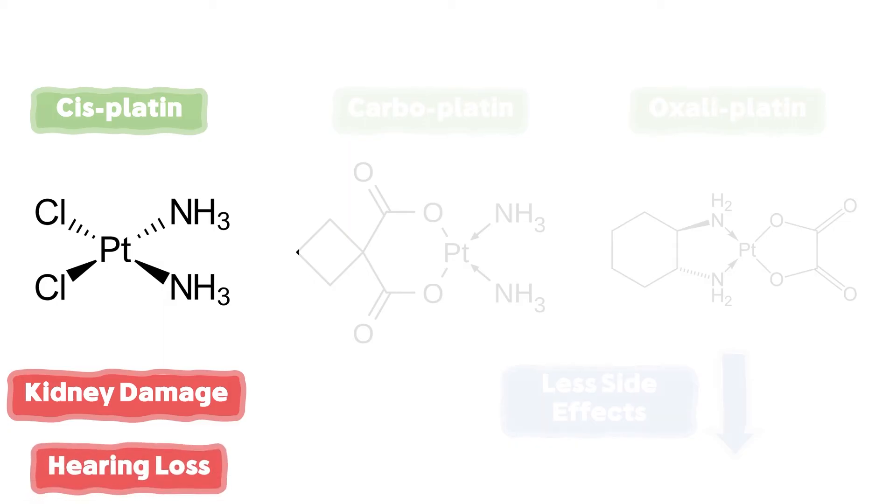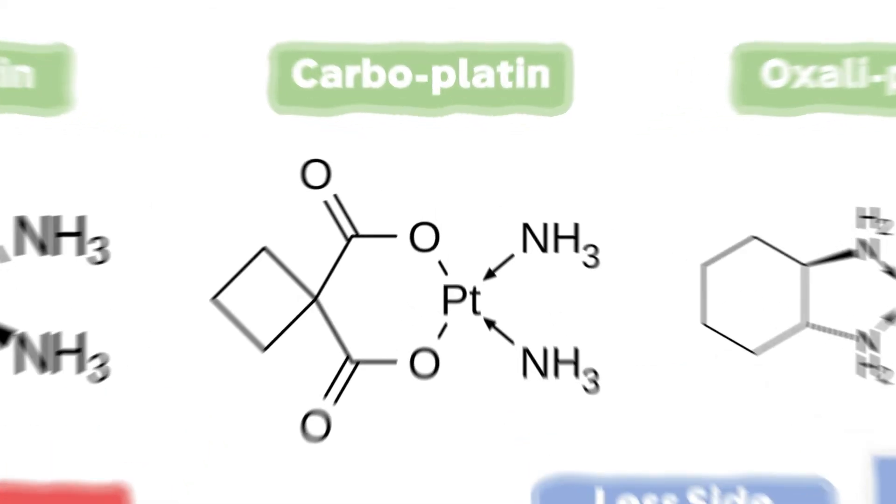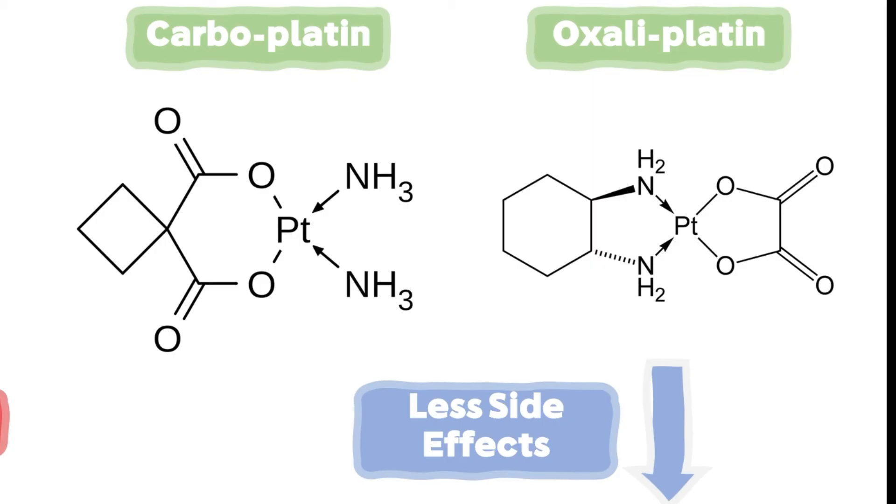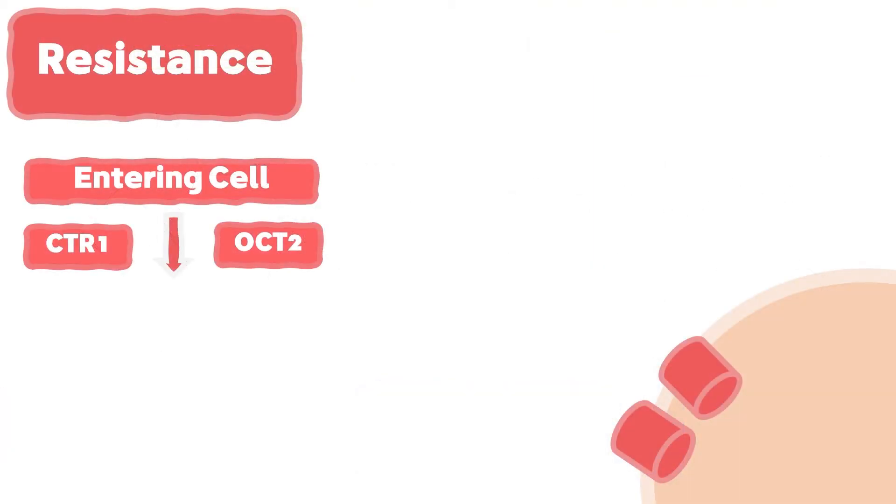Accordingly, two platinum compounds were used: carboplatin and oxaliplatin, with less reactivity but also with less side effects. Cancer cells can decrease the influx or entry of cisplatin by decreasing the expression of CTR1 or OCT2.